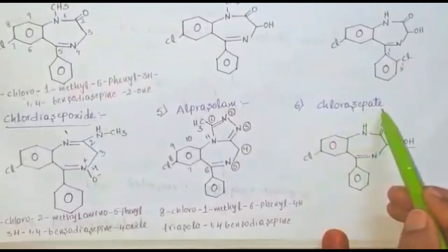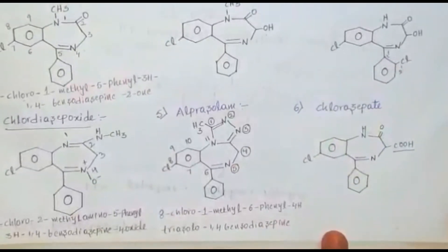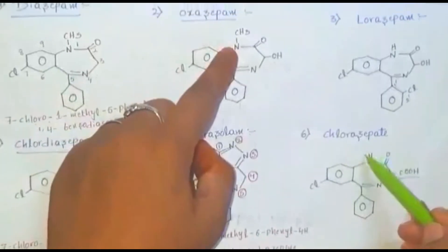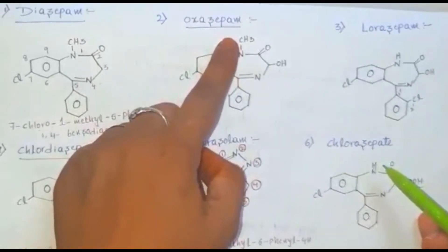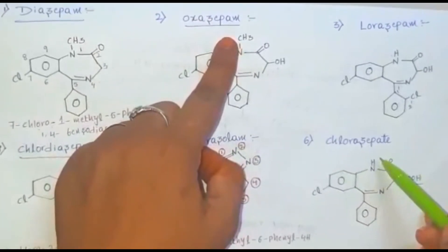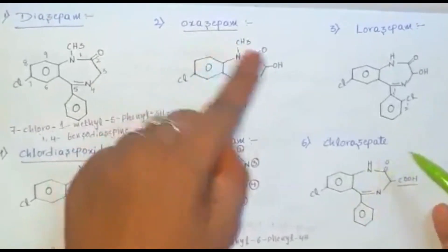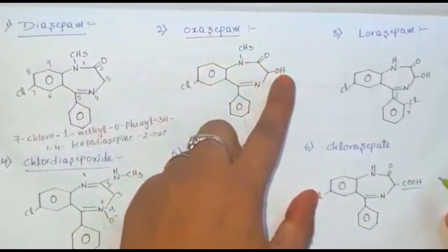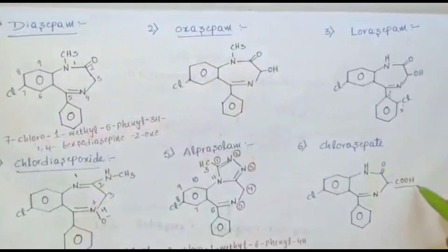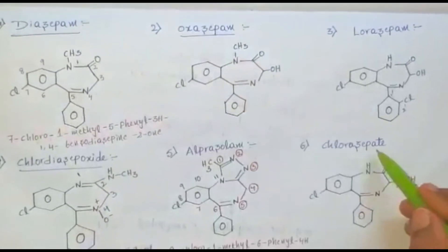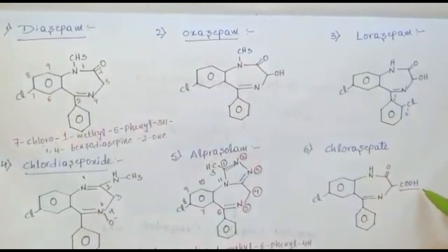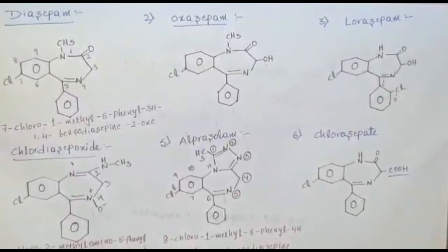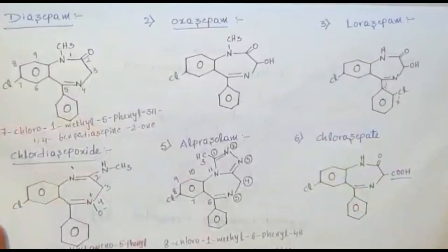Next, clorazepate: the difference between oxazepam and clorazepate is that the first position contains a methyl group in oxazepam while clorazepate contains hydrogen. At the third position, oxazepam contains an OH group, while clorazepate contains a COOH (carboxylic acid) group substituted at the third position — that is called clorazepate.